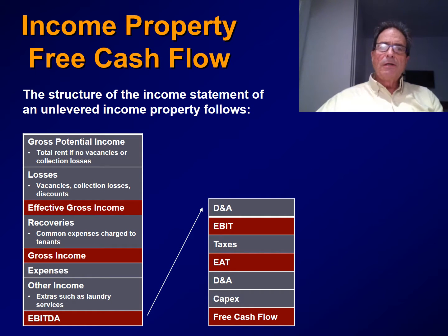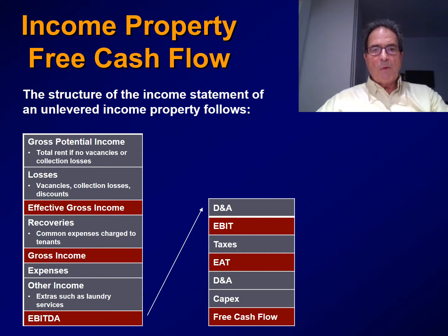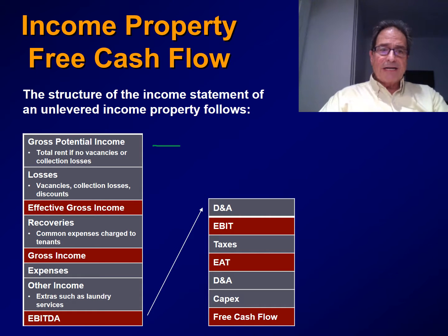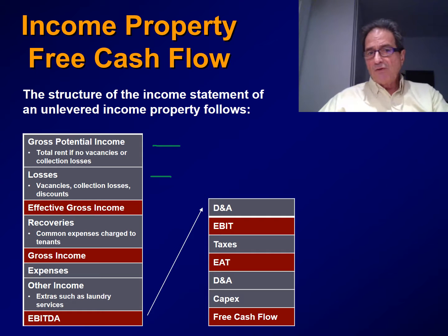First, let's look at the structure of the income statement of an unlevered income property. It is composed in the following way. First, we have gross potential income, which is the potential rent of the property, assuming no vacancies or collection losses. Then we subtract the losses that include vacancies, collection losses, and possible discounts that we give to some clients.